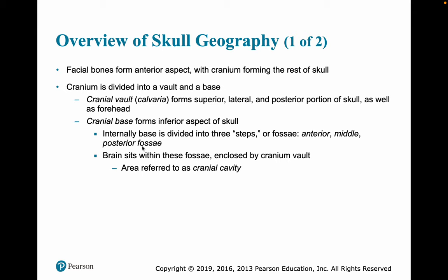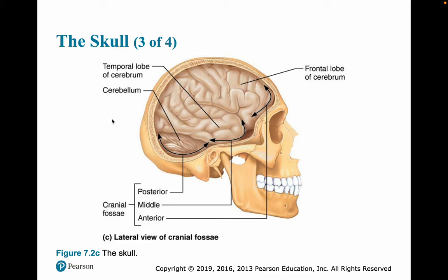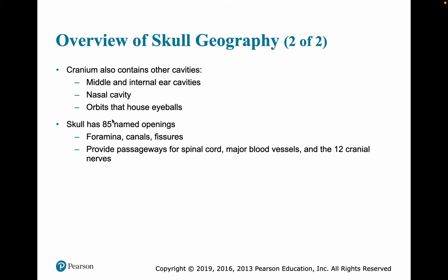Internally, the base is divided into three steps called fossae — the anterior, middle, and posterior fossae. The brain sits within those fossae, enclosed by the cranial vault. This area is referred to as the cranial cavity. The cranium also has other cavities: the middle and internal ear cavities, nasal cavity, and the orbits that hold the eyeballs. There are at least 85 different named openings — so when your mother said you had holes in your head, you did. You have about 85 of them that are named.